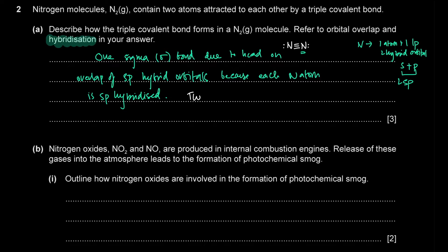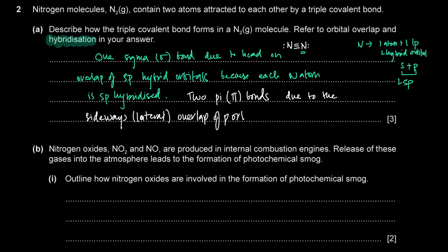The two pi bonds form due to the sideways or lateral overlap of unhybridized p orbitals. So in summary: each nitrogen is sp hybridized; the sp hybrid orbitals form the sigma bond and hold the lone pairs; and the two pi bonds result from sideways overlap of the unhybridized p orbitals.